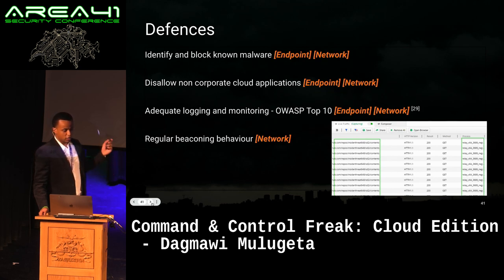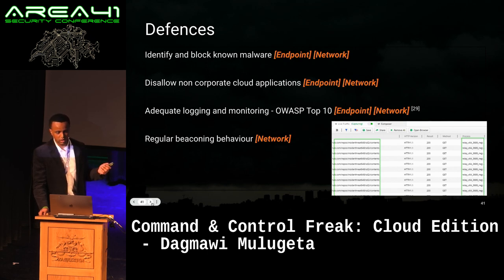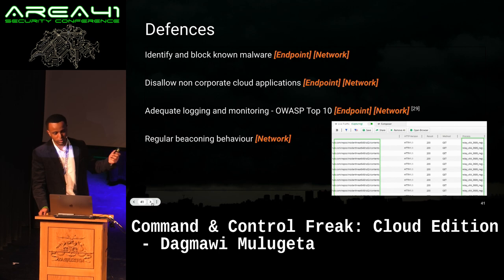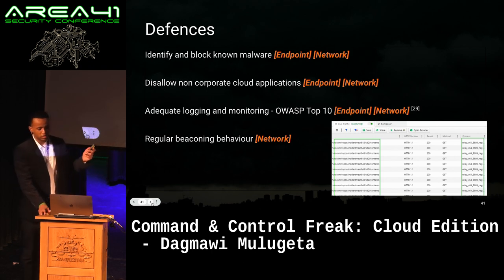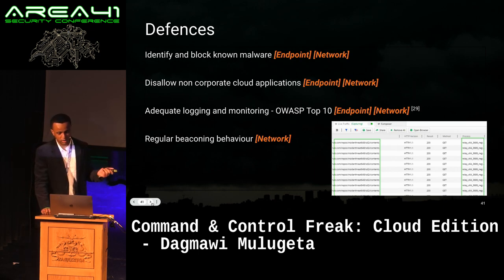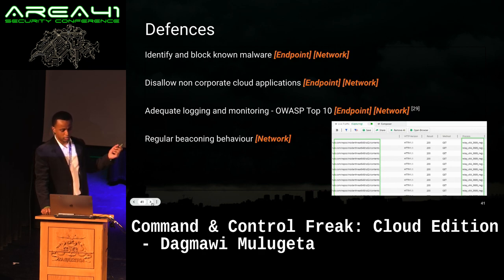Secondly, if you can, disallow non-corporate cloud apps. If nobody in your corporation is using Dropbox, maybe you don't need it. If you can't disallow it because some people collaborate externally, maybe monitor connections to that app instance so you can see if anything anomalous is occurring. Thirdly — this is an OWASP top 10 item — make sure you have adequate logging and monitoring from the processes in your environment so you can see if communication is going to a particular cloud app instance that isn't warranted or is anomalous.